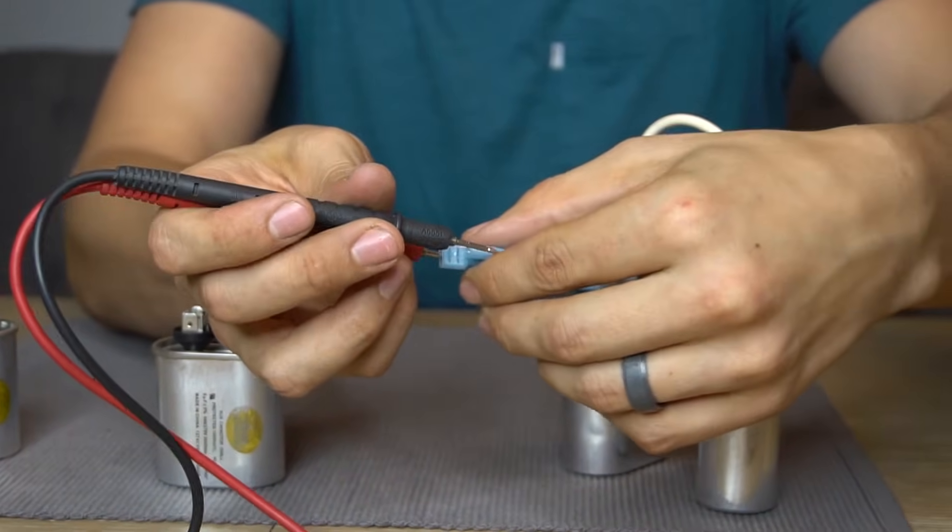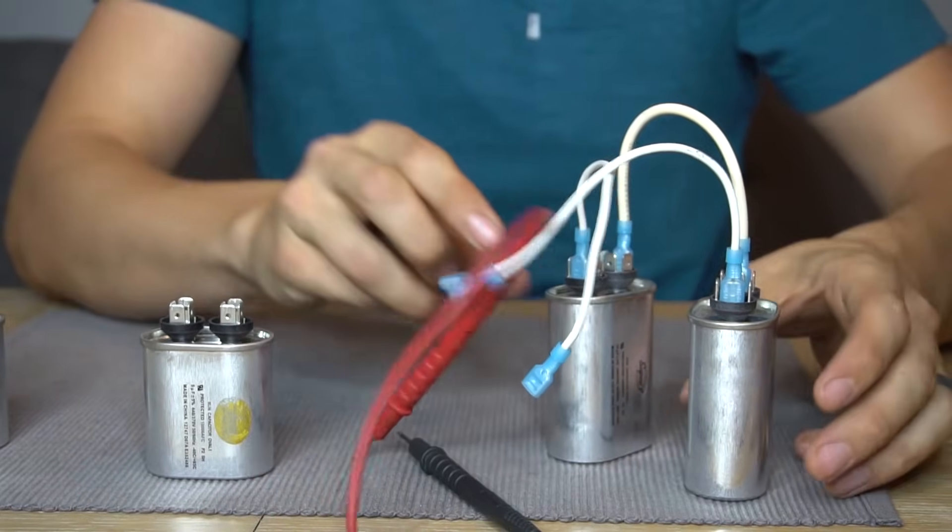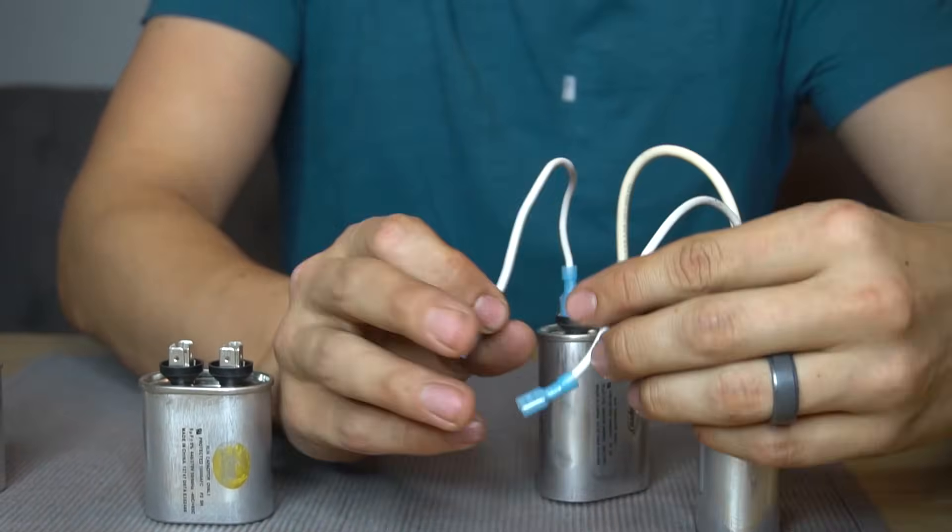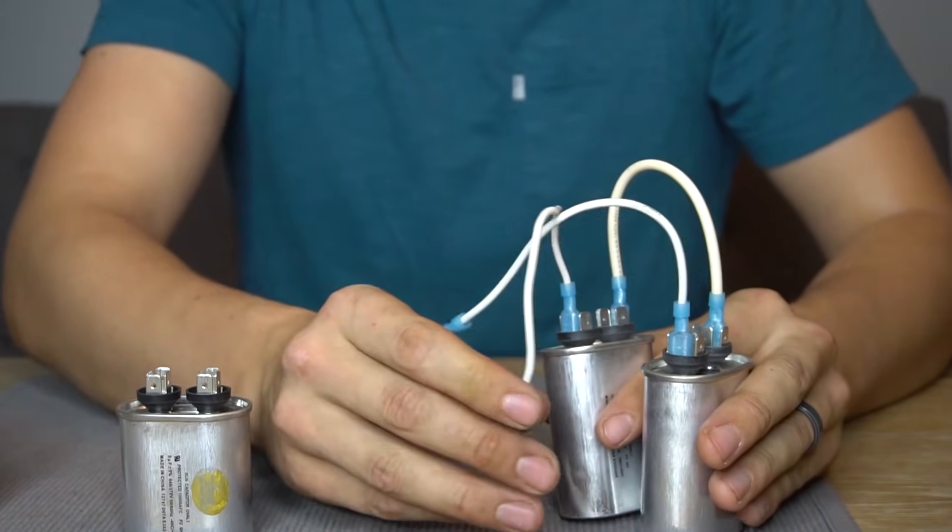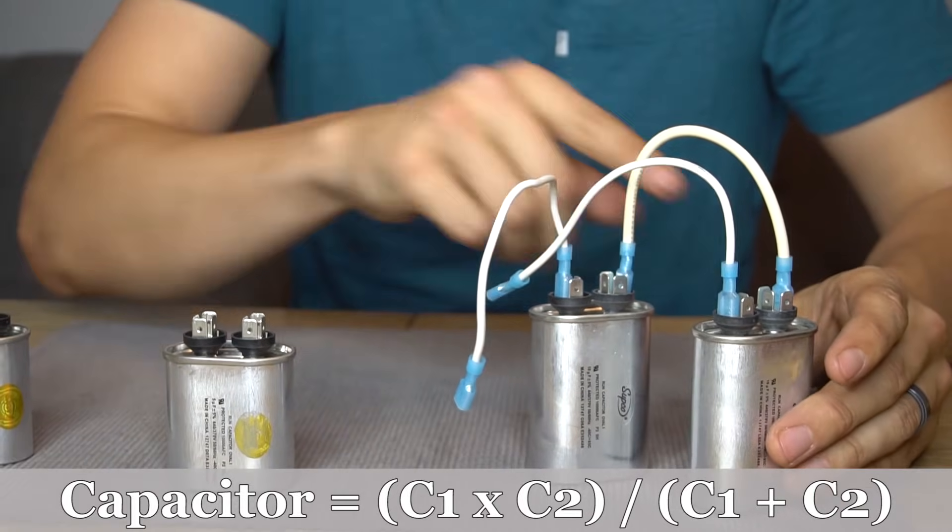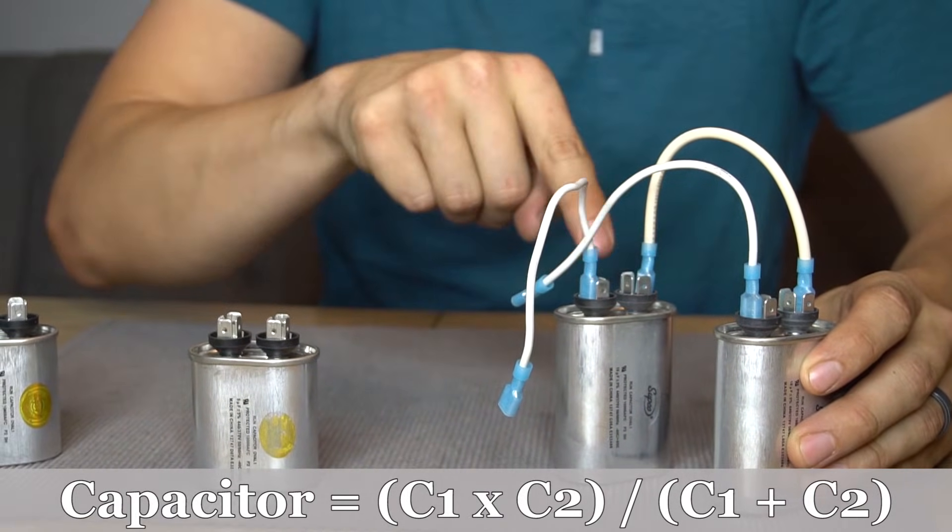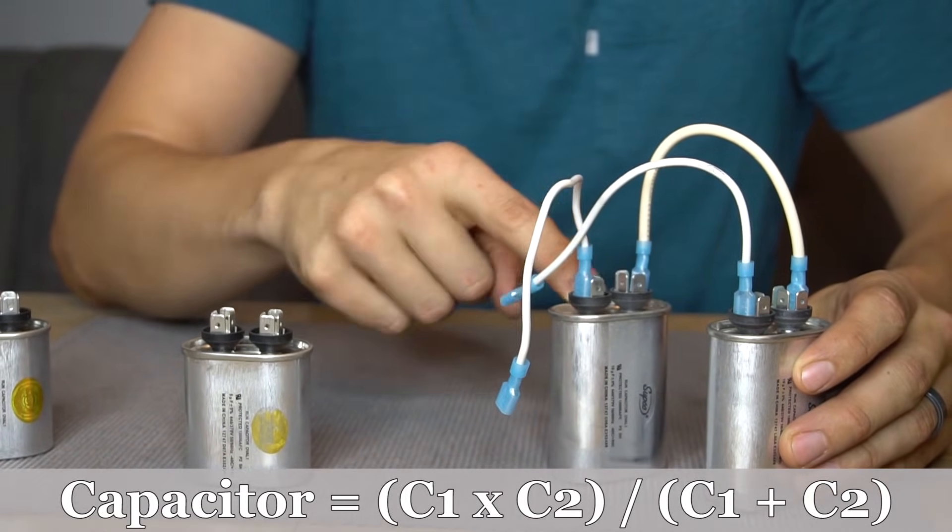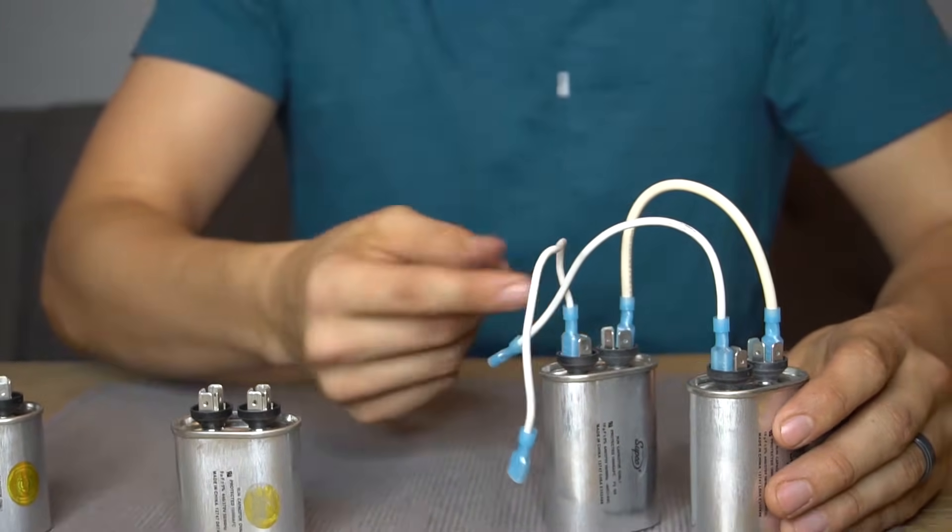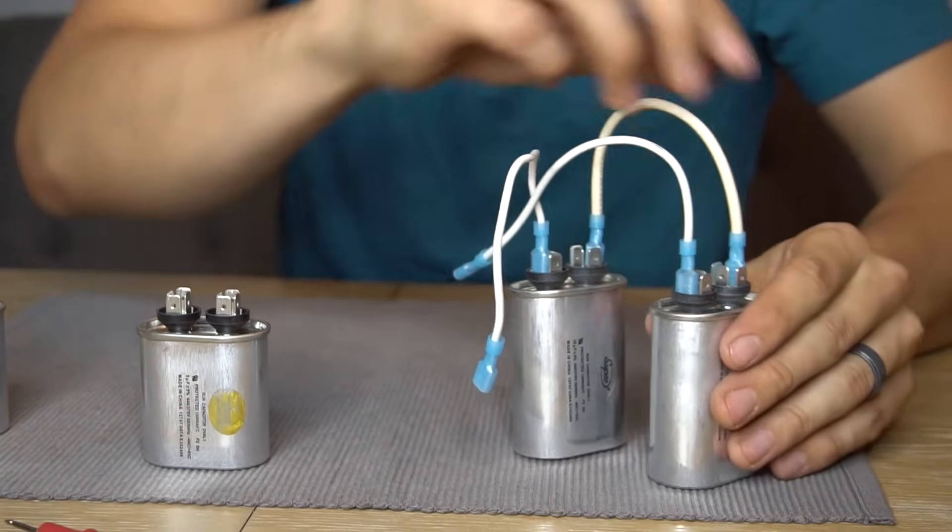So if you're wondering how that works, to figure out the end result, what the end microfarad rating will be from combining two capacitors, you actually have to use a formula. And that formula is capacitor one times capacitor two divided by capacitor one plus capacitor two. Or you could just try a couple different combinations to see what you get.